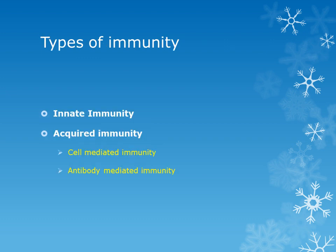There are two important types of immunity: inborn or innate immunity, and acquired immunity. Acquired immunity has two further subtypes: cell-mediated immunity and antibody-mediated immunity. These will be studied in detail in coming lectures.